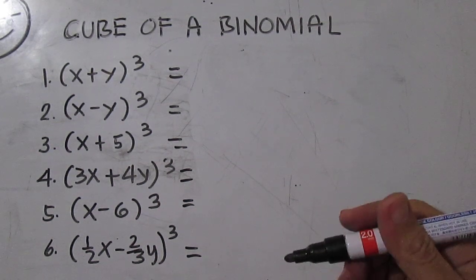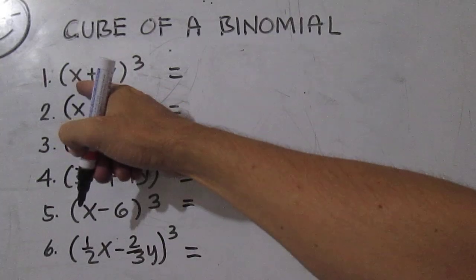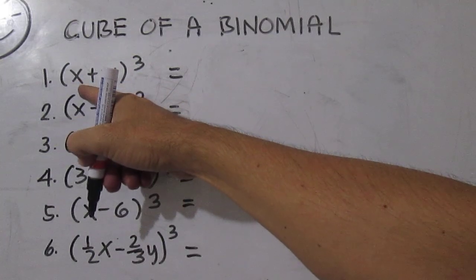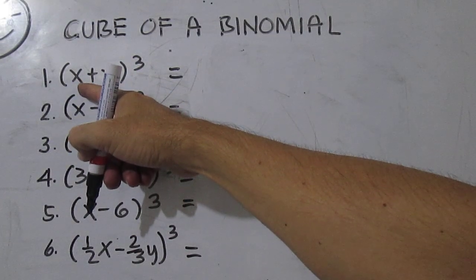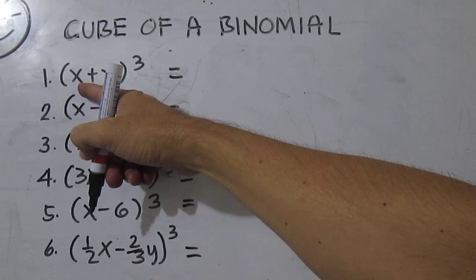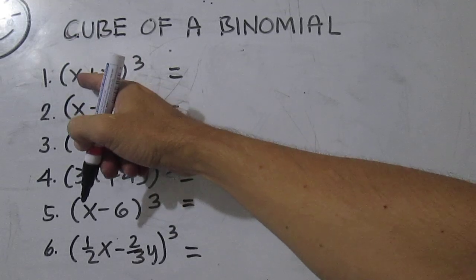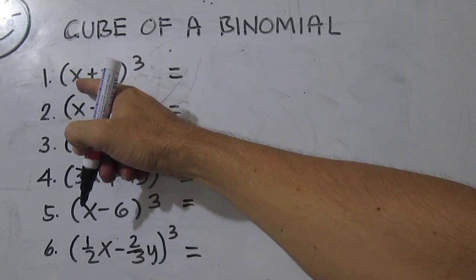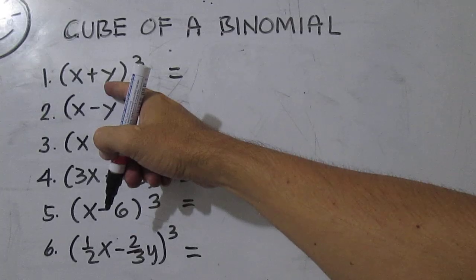The cube of a binomial consists of the cube of the first term, thrice the product of the square of the first term and the second term, and thrice the product of the first term and the square of the second term.